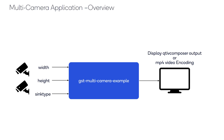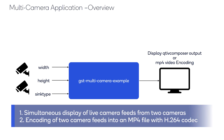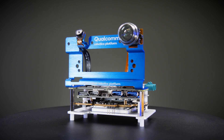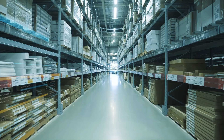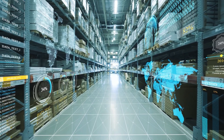Now let's explore the multi-camera sample app in some detail. It is designed to demonstrate two main features: first, simultaneous display of live camera feed from two cameras; and second, encoding of two camera feeds into an MP4 with H.264 codec. It works as a command line application that streams from two camera sensors on the Qualcomm Robotics RB3 Gen2 kit, making it ideal for use cases such as dash camera or stereo cameras.